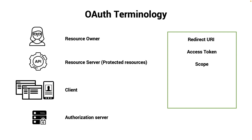Scopes — these are permissions to protect resources on behalf of the resource owner. Scope definitions are flexible: it might be an entire API, a particular type of access, or a specific piece of functionality. Consent page — the page that the user can see and approve or reject the scope. Imagine logging in with Twitter on different applications — that page where Twitter asks you to approve is the consent page.